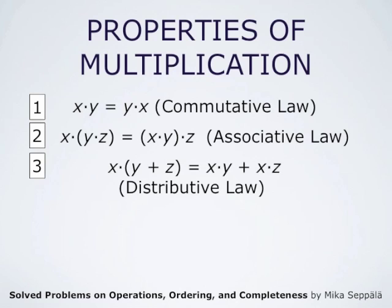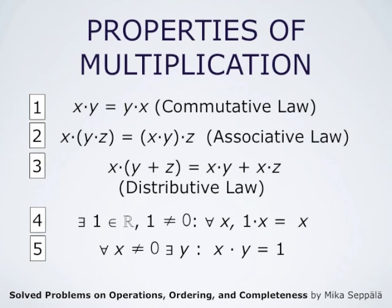Then there is a neutral element, one, which is different from zero and has the property that one times x is x for all x. And finally, for all x different from zero, there is a multiplicative inverse — that is, there is always a number y such that x times y equals one. These are the defining properties of multiplication and addition.